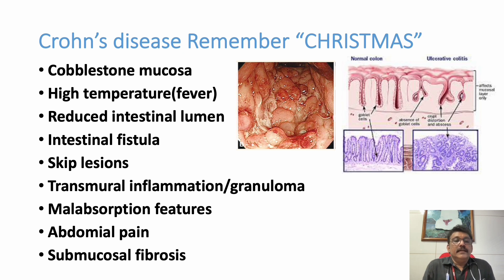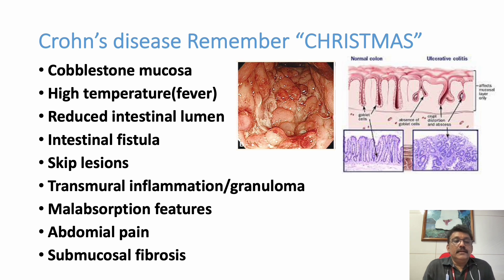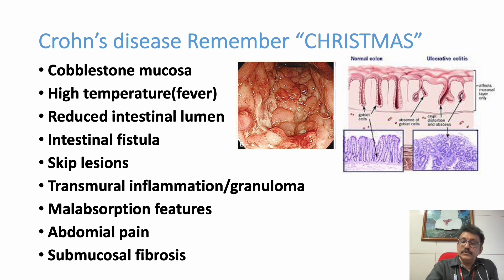Skip lesions — areas where there is no inflammation. Transmural inflammation and granulomas are seen. Malabsorption occurs because the inflamed intestine will not absorb nutrients, leading to malabsorption syndrome. Abdominal pain can be present. Submucosal fibrosis can be produced in late stages of the disease.